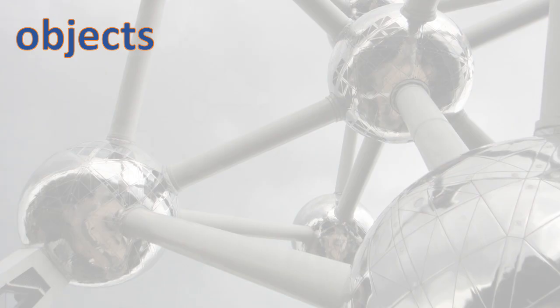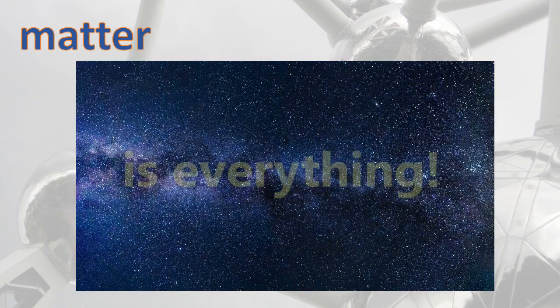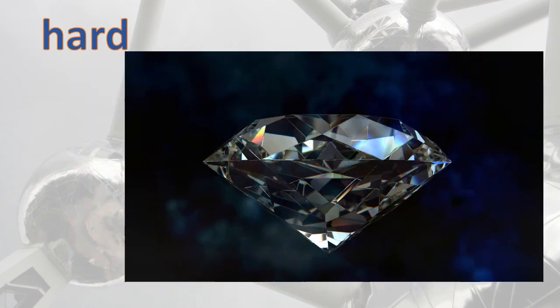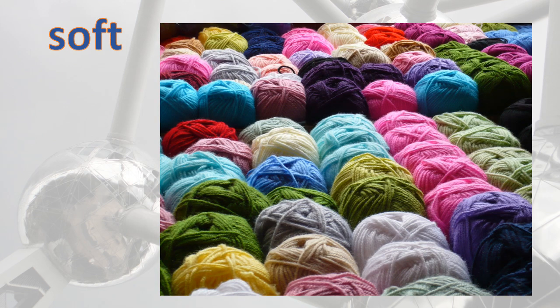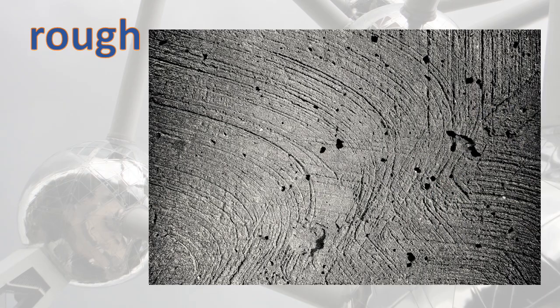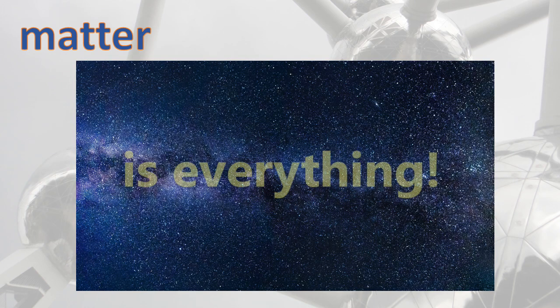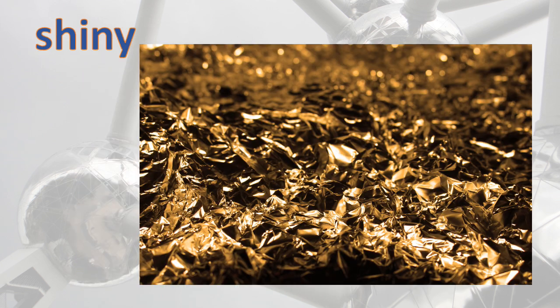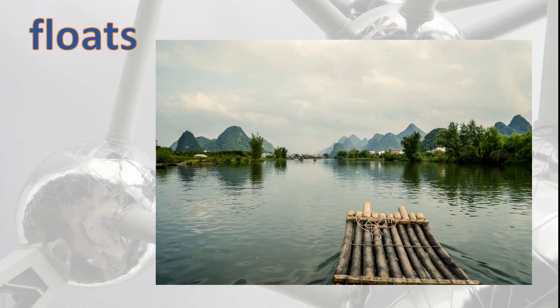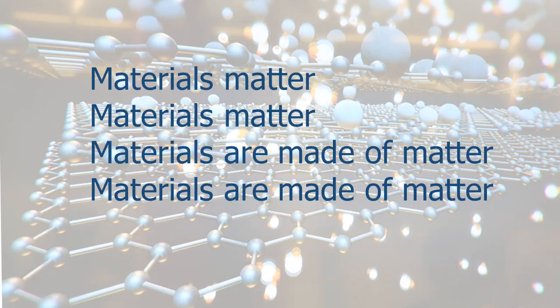Objects are things, a clock, a TV. Matter makes them up — all things, you and me. Some materials are hard, some are soft, some are smooth, and some are rough. Objects are things, like a clock, a TV. Matter makes them up — all things, you and me. Some materials are shiny, some are dull. Some float, some sink like a stone. Materials matter. Materials matter. Materials matter. Materials are made of matter. Materials are made of matter. Materials matter.